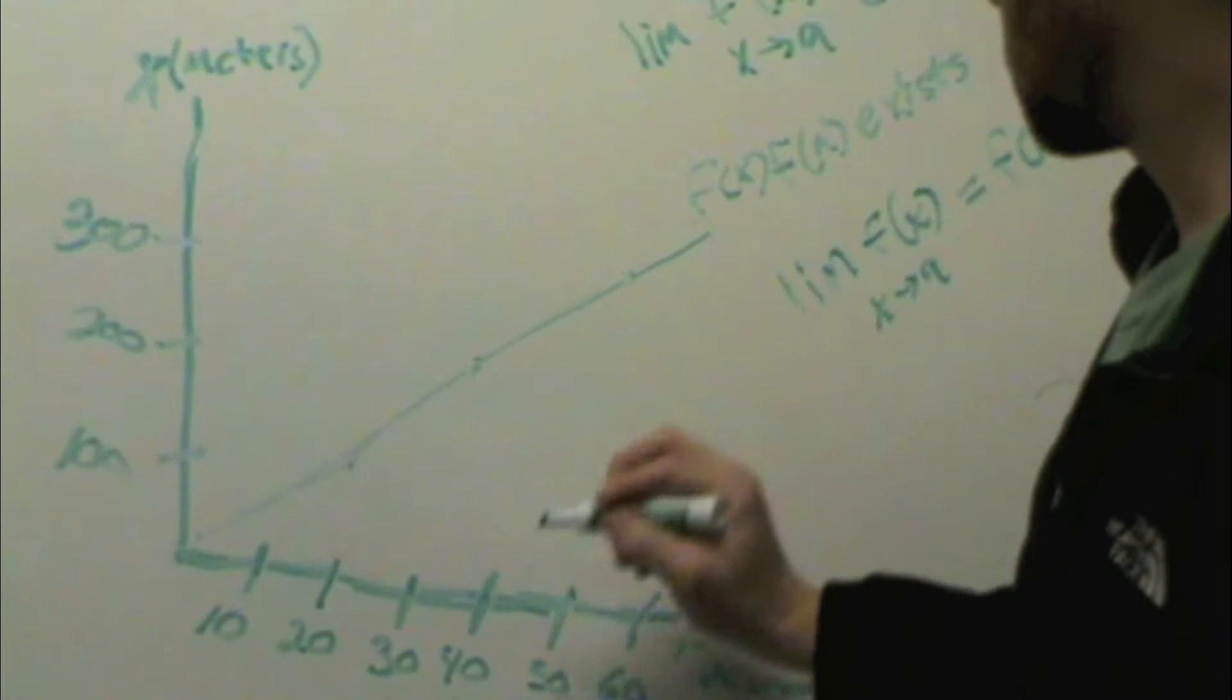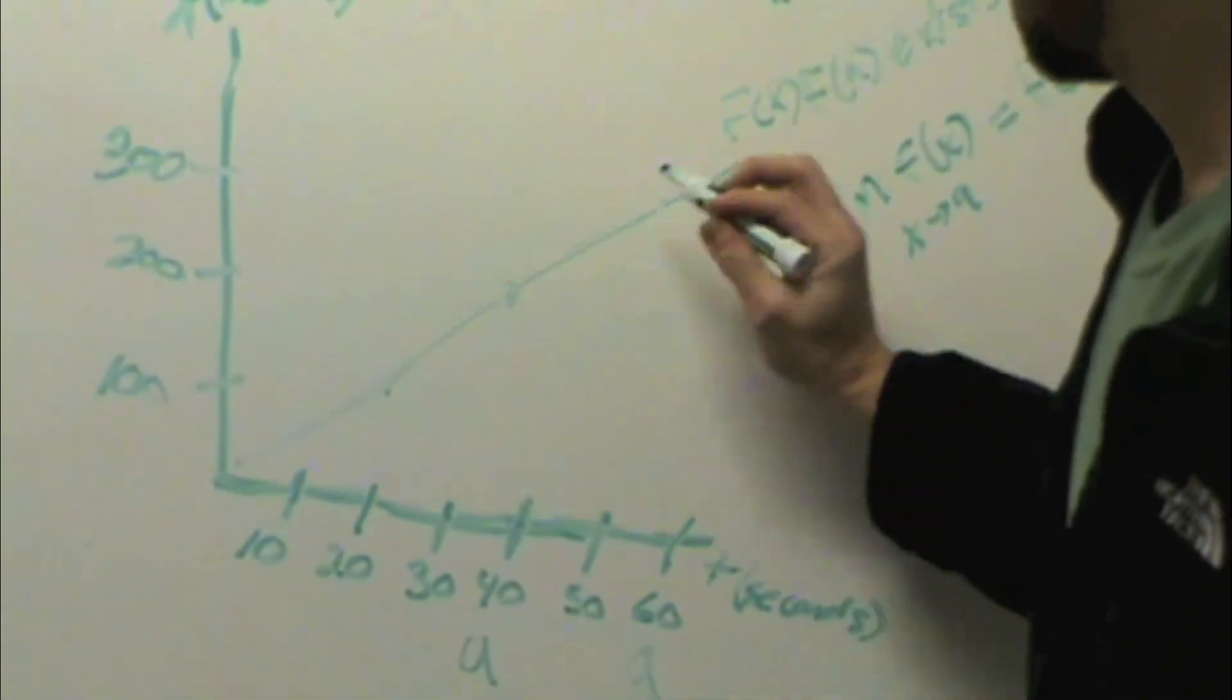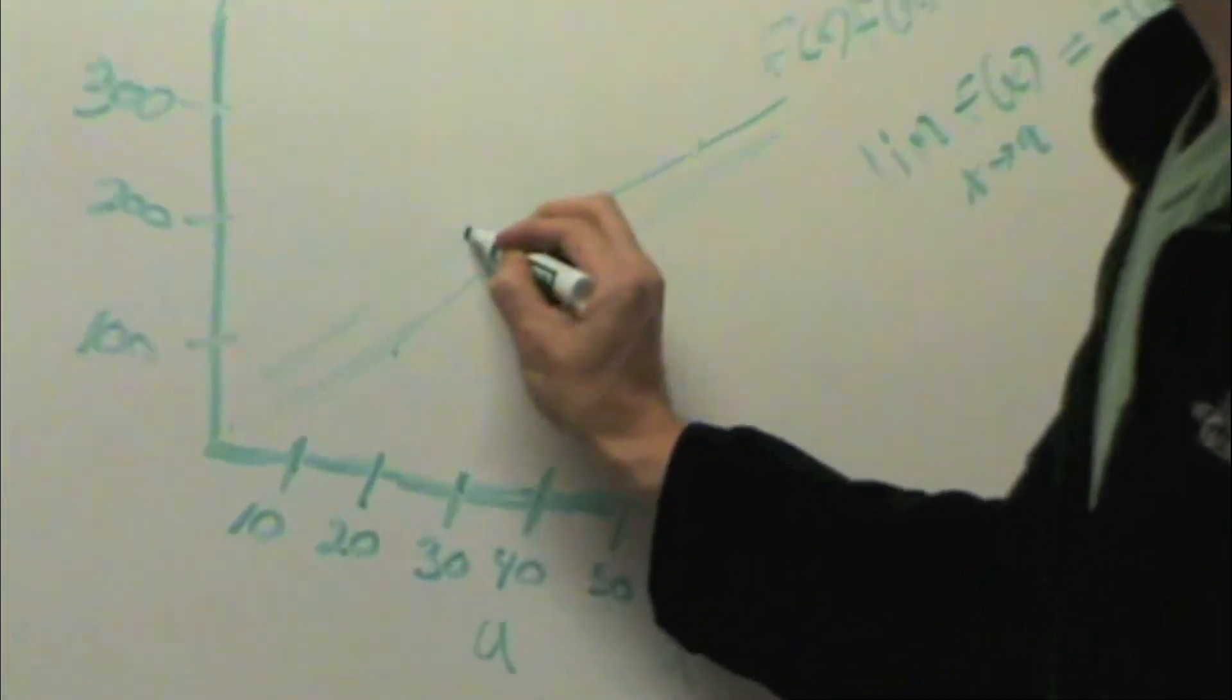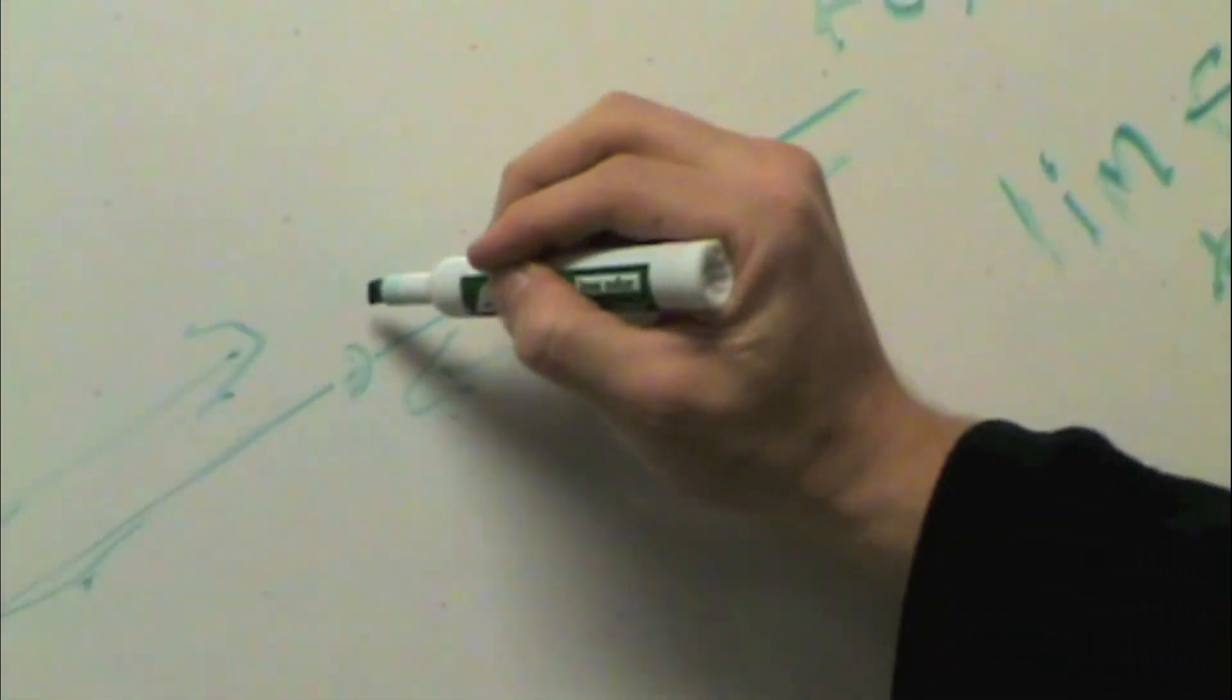...and as this is approaching point a from either this side or this side, it's going to equal f of a, which is right there.